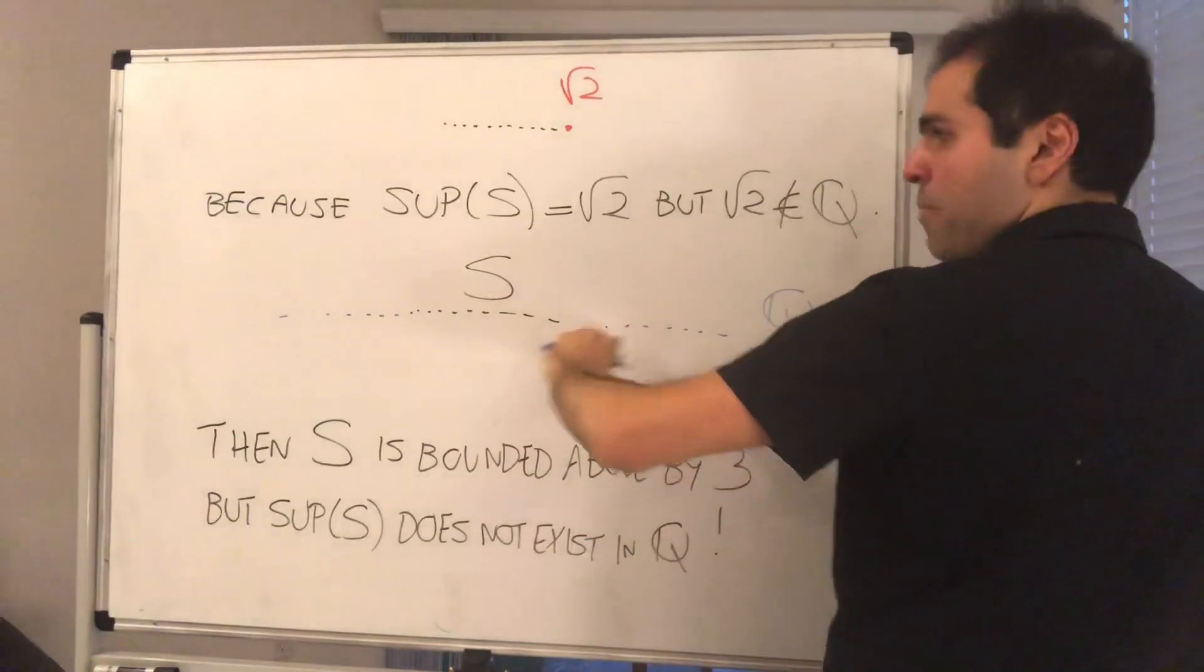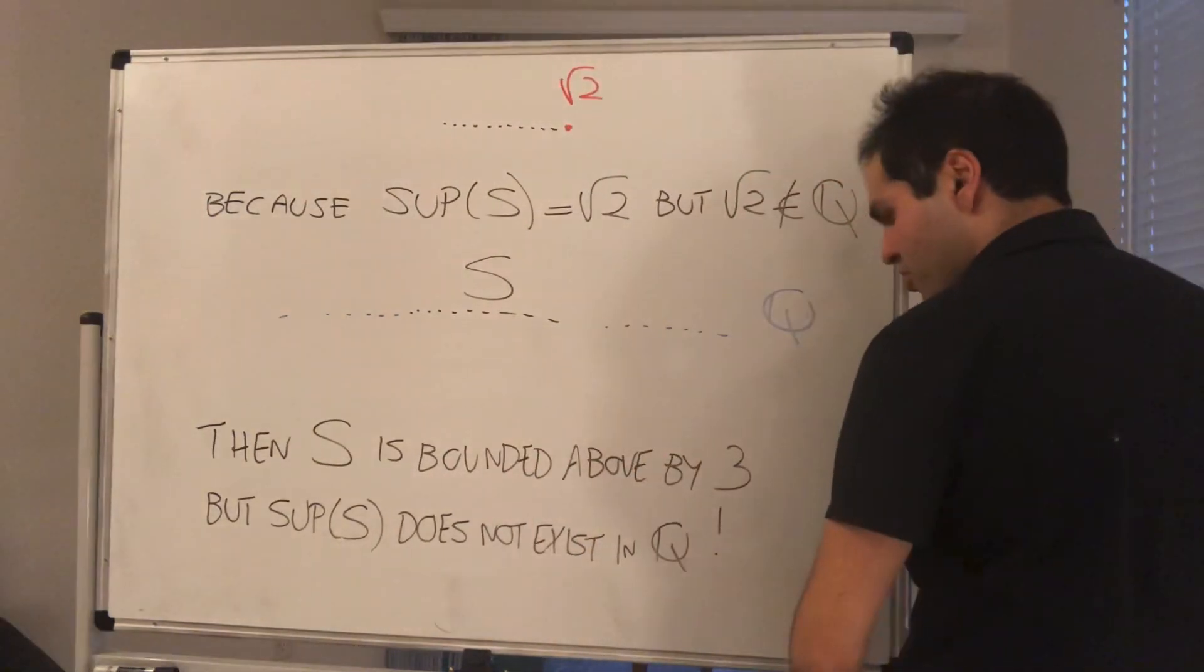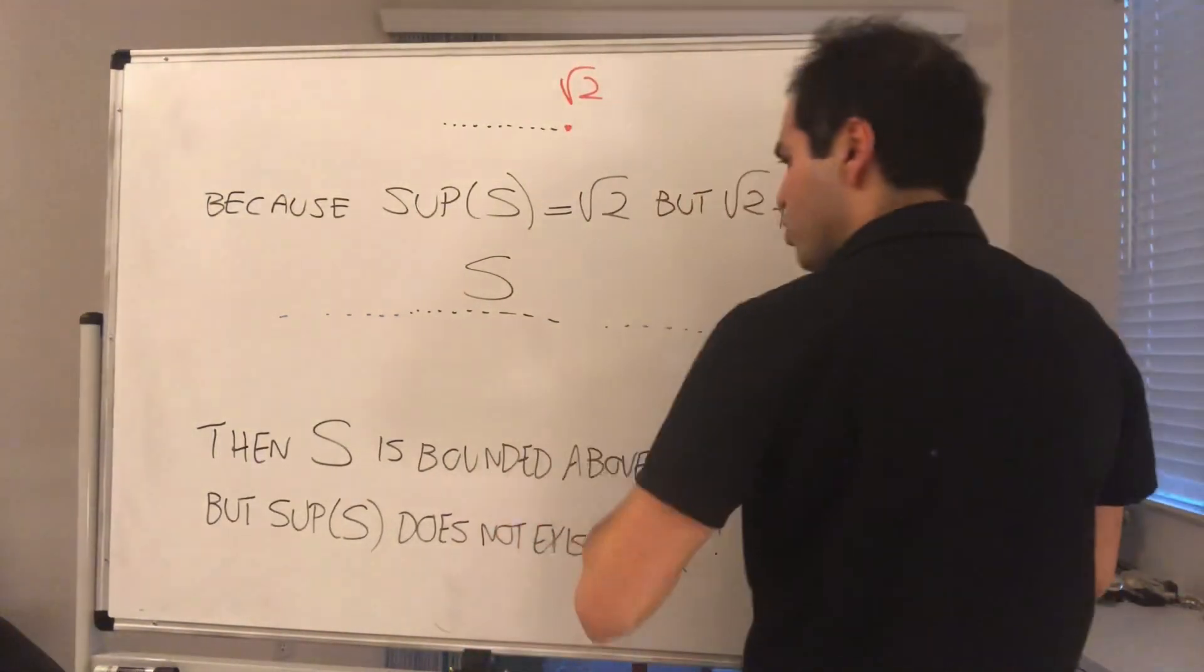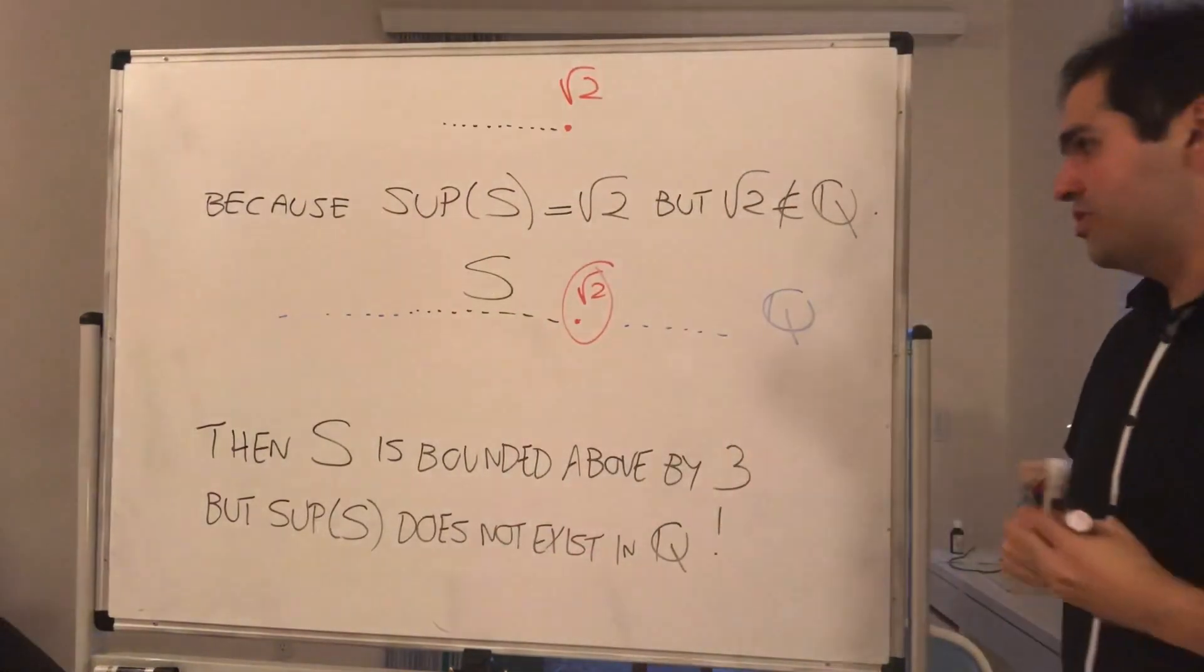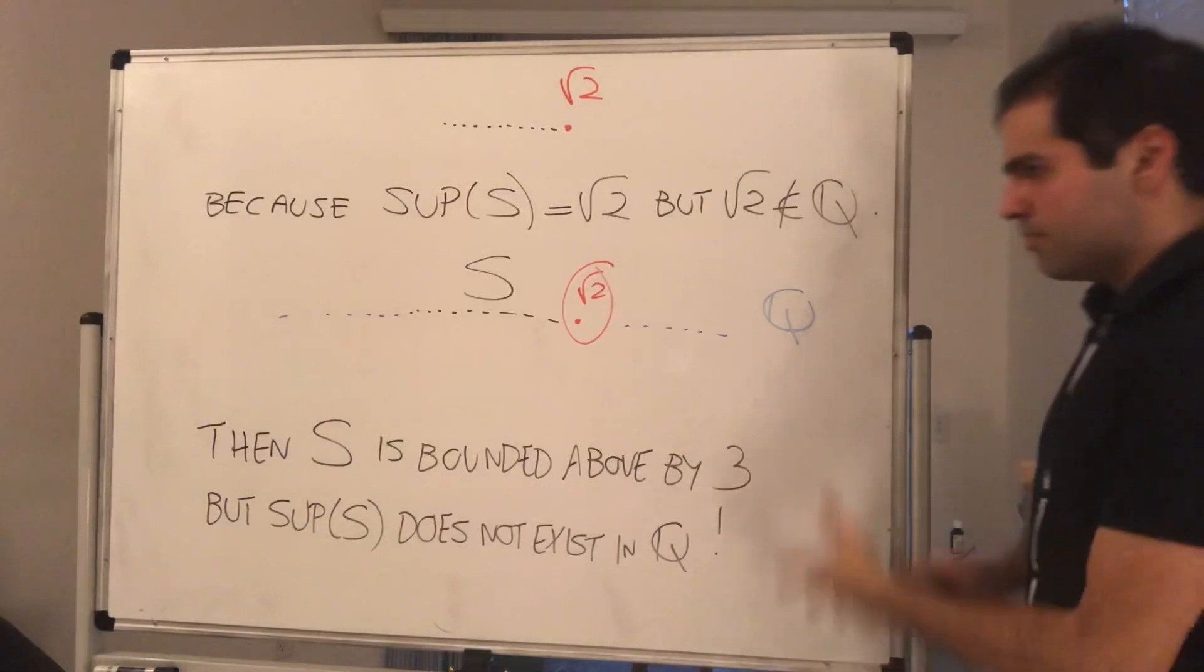You see, if you map S, and then also all the rational numbers, then square root of 2, which is the supremum, is actually not in the rational numbers. In other words, it's in one of the gaps of the rational numbers.